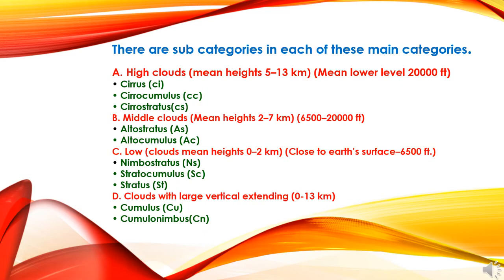There are sub-categories in each of these main families. Family A — high clouds — has three sub-categories: first is Cirrus Cloud, second is Cirrocumulus Cloud, and third is Cirrostratus Cloud. Family B — middle clouds — has two sub-categories: first is Altostratus Cloud and second is Altocumulus Cloud. Family C — low clouds — has three sub-categories: first is Nimbostratus Cloud, second is Stratocumulus Cloud, and third is Stratus Cloud. Family D — clouds with large vertical extent — has two sub-categories: first is Cumulus Cloud and second is Cumulonimbus Cloud.